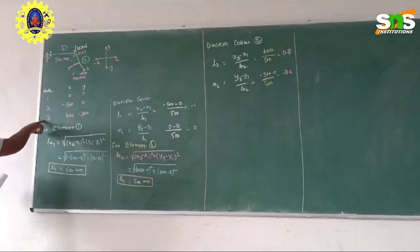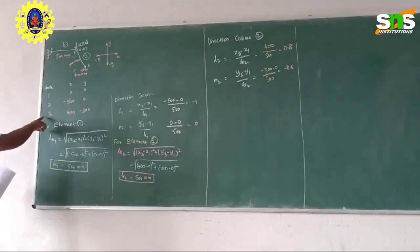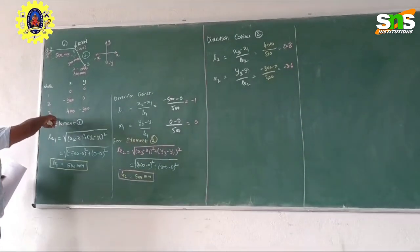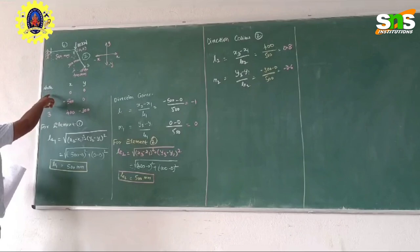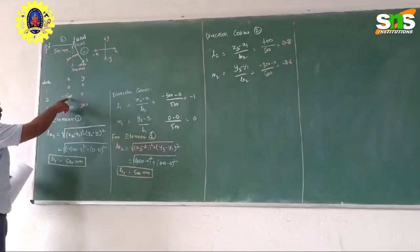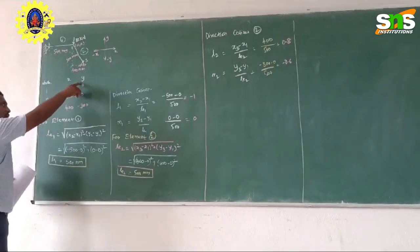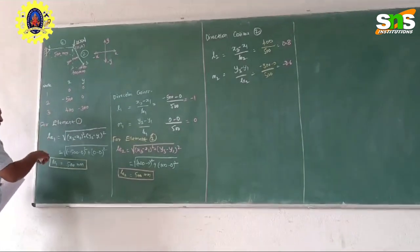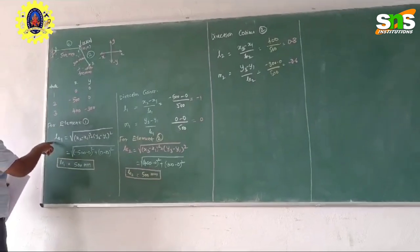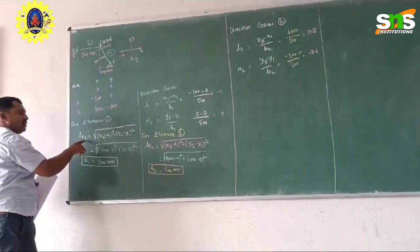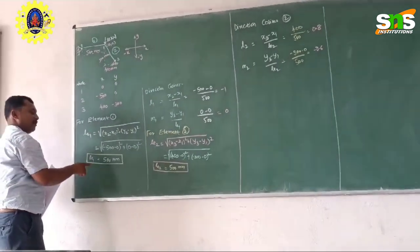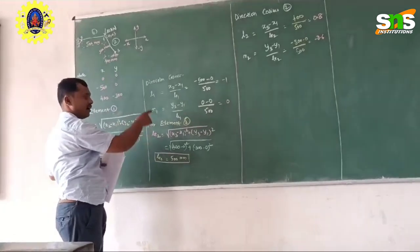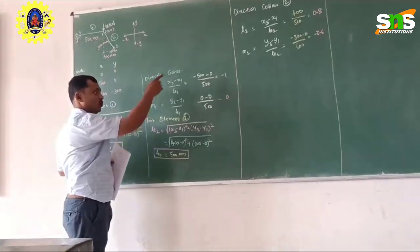In step number 1 we have the classroom problem. In step number 1 we have seen how to number the nodes, how to find x1, x2, x3 and y1, y2, y3. Now in step number 2, how to find the element equation — that is the length of the element — is followed, and the direction cosine for element number 1 and 2 is followed.